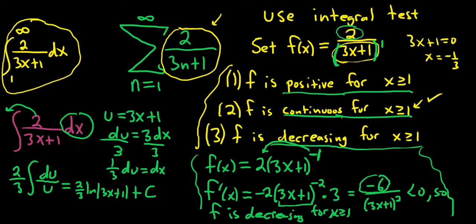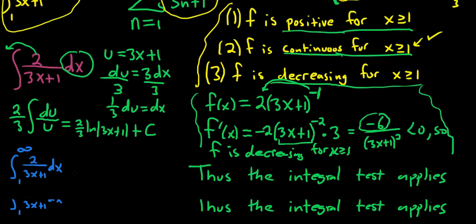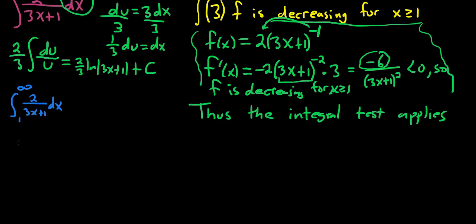So now let's go ahead and deal with the improper one. Let me change colors here. So we have 1 to infinity, 2 over 3x+1 dx. Scroll down a little bit. Give us some more room. And this is equal to, so what you do now is you replace the infinity with letter b and you take the limit as b goes to infinity. And we're going from 1 to b of 2 over 3x+1 dx.